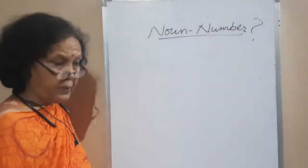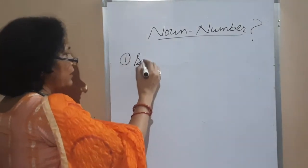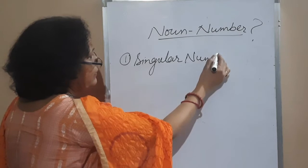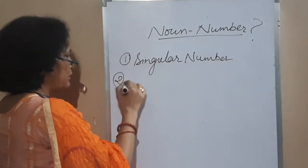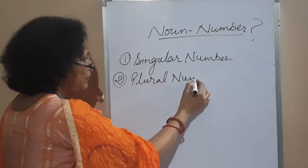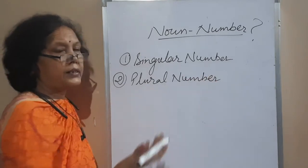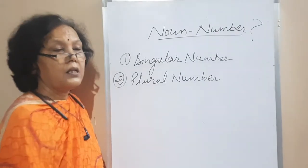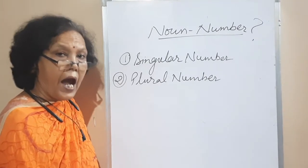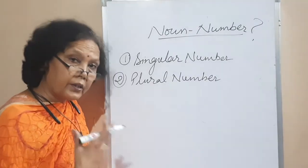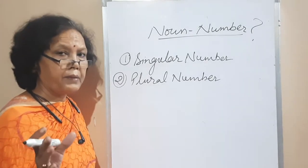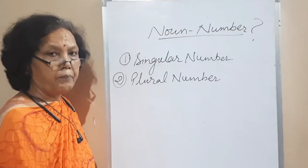There are two types of numbers in English. One is singular number and the other is plural number. Singular means single — the number shows only one thing. That is called singular number. The word that shows more than one — two, three, or many persons, things, or places — those are called plural numbers of a noun.